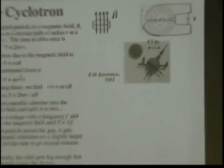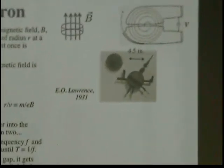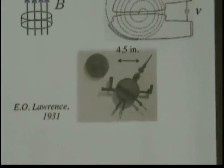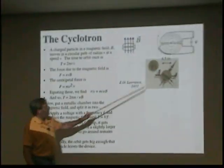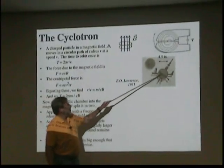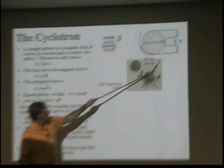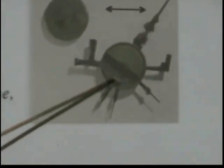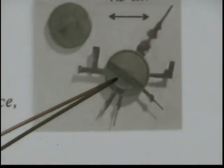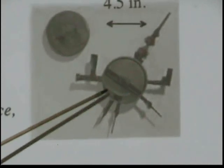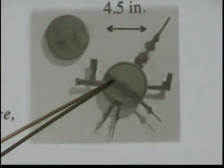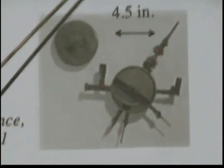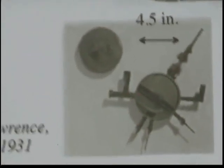This is the very first cyclotron, built back in 1931 — four and a half inches big. What you see are the two plates, which were called Ds. This is where the particles were injected at the center, and then across these two plates the field would alternate, giving acceleration across these two points.